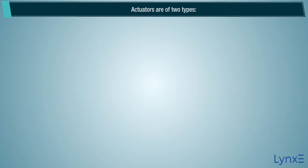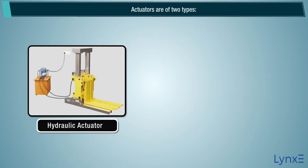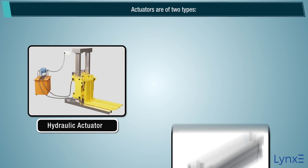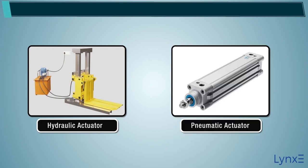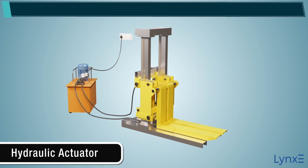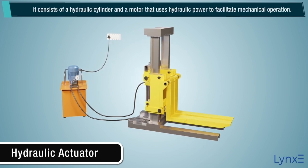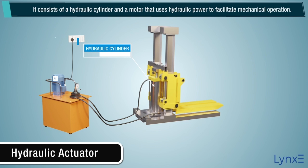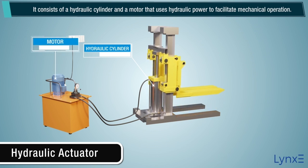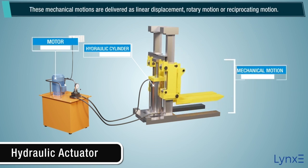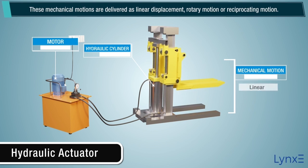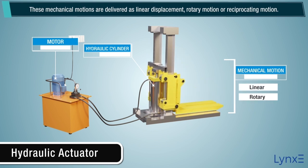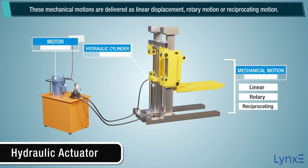Actuators are of two types: hydraulic actuators and pneumatic actuators. Hydraulic actuators consist of a hydraulic cylinder and a motor that uses hydraulic power to facilitate mechanical operation. These mechanical motions are delivered as linear displacement, rotary motion, or reciprocating motion.